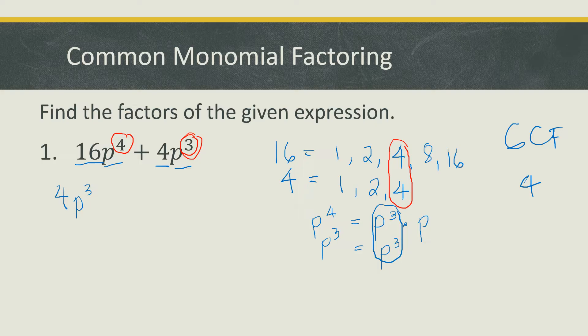We now have 4p cubed as our common monomial factor. The next step is to divide each term by the common monomial factor. Divide the first term, 16p to the 4th, by 4p cubed. 16 divided by 4 is 4, and p to the 4th divided by p cubed — subtract the exponents — gives p. So the first term of the second factor is 4p.